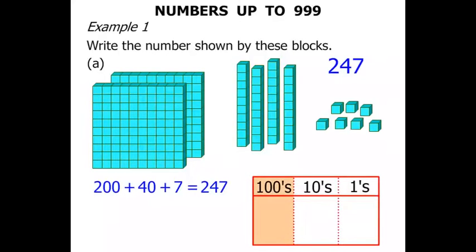In terms of hundreds, how many did we have? We had 2 of the flats. We have 2 in the hundreds position. How many tens did we have? We had 4. Let us write the 4 there. How many ones did we have? We had 7.